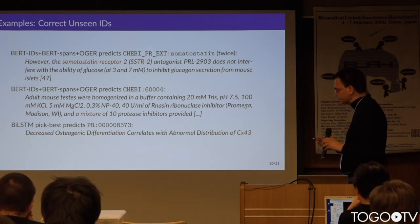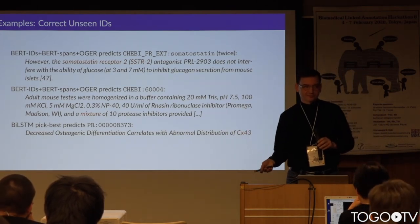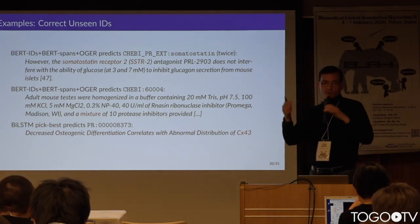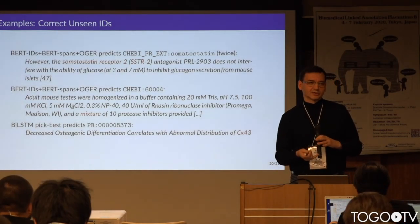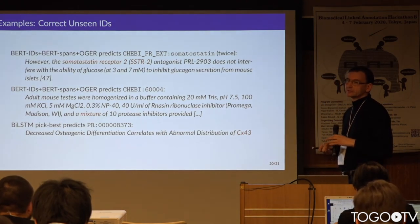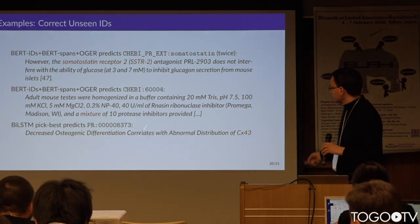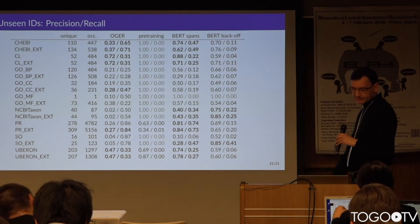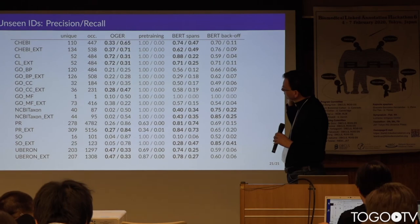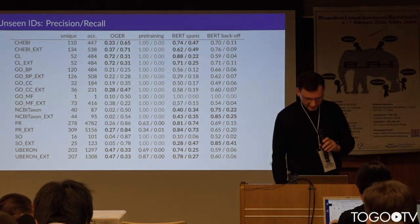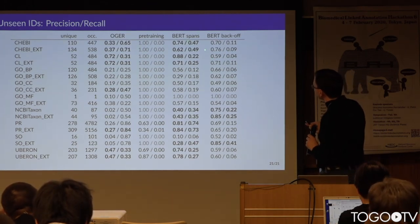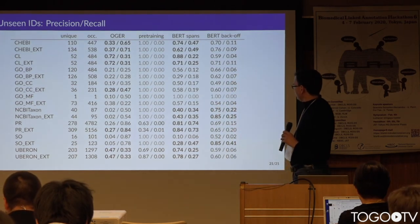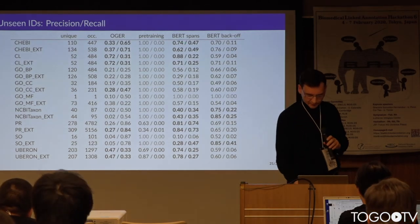An interesting aspect of our approach is that we are able to predict IDs not seen in training data — in one approach through a pre-training phase where some IDs are stored in the neural network's memory, and in the other through the OGRA lookup which can provide IDs not present in training data. For example, we correctly recognized an acetylated receptor as a KB entity. Looking only at unseen IDs, one approach achieved a precision of 71% for some ontologies — quite interesting results for unseen IDs.